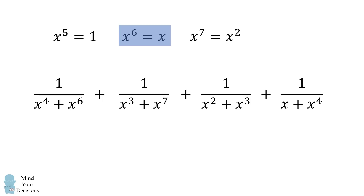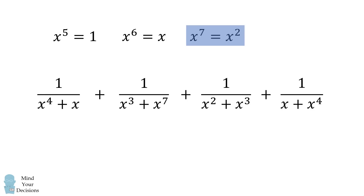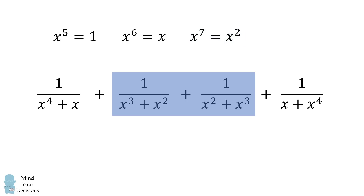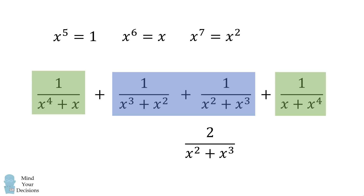Then, x to the power of 6 is equal to x, which we substitute into the first fraction, and x to the power of 7 is equal to x squared, which we substitute into the second fraction. The second and third fractions now have exactly the same denominator, so their sum is 2 divided by x squared plus x cubed. The first and last fractions also have the same denominator, so their sum is 2 divided by x plus x to the power of 4.